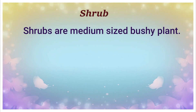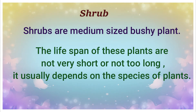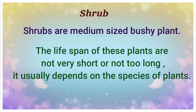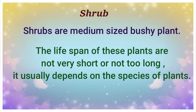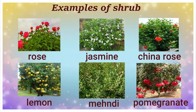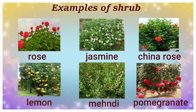The next type is shrubs. Shrubs are medium-sized bushy plants. Their lifespan is not very short or too long like trees — it usually depends on the species. Generally, most flowering plants are shrubs, like rose, jasmine, china rose, and other plants like lemon, mehendi, and pomegranate.